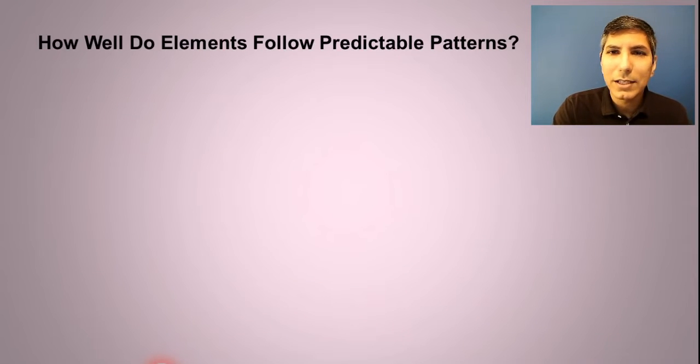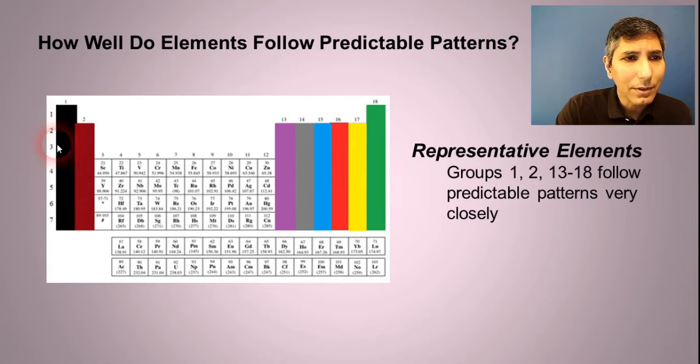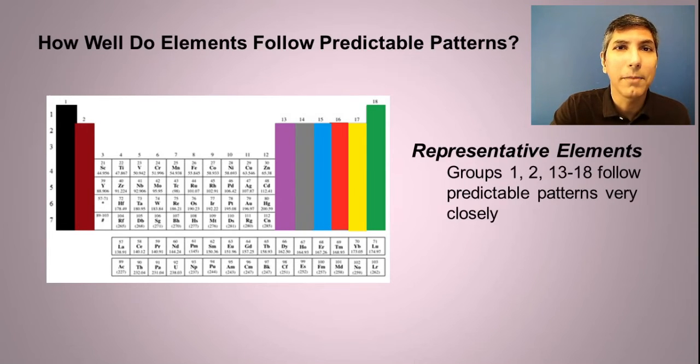Now we can also classify elements by the way in which they follow predictable patterns. If you look at the two groups on the far left side of the table and the six on the far right side of the table, those are the elements that follow patterns very well, very closely. Those are called the representative elements. And we call them that because they are used to represent the patterns on the periodic table very often.